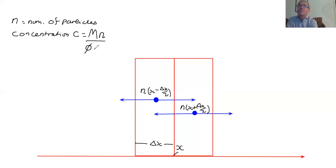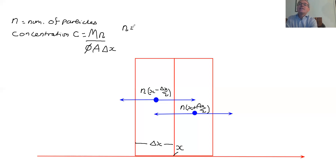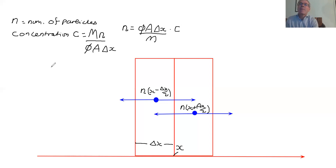Because we're in a porous medium, we have a porosity phi, since not all the volume is full of fluid. The box has a cross-sectional area A and a length delta X. So N = phi·A·delta X divided by M times C. So N and C are linearly related, which should be obvious.